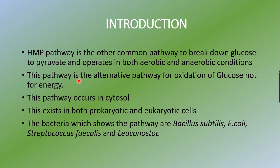This pathway occurs mainly in the cytosol (cytoplasm) and exists in both prokaryotic and eukaryotic cells. The HMP pathway has been demonstrated in bacteria such as Bacillus subtilis, E. coli, Streptococcus faecalis, and Leuconostoc. It occurs in the cytoplasm regardless of whether the cell is prokaryotic or eukaryotic.